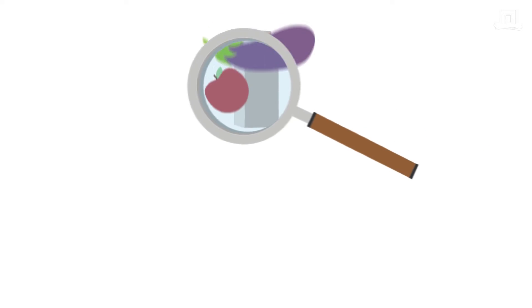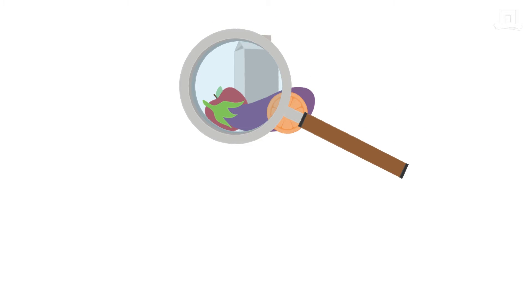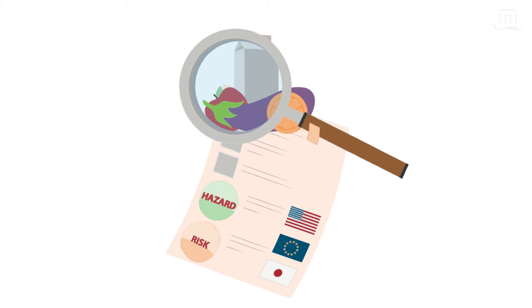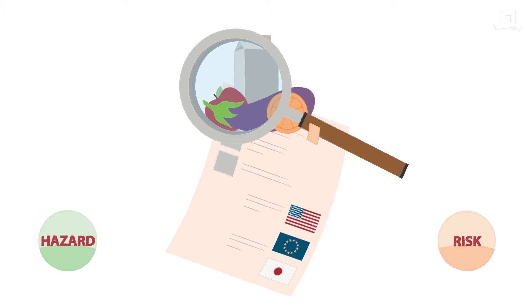When you want to assess risks in the food chain, you first need to learn some basic principles. These help to make sure that risk assessment is done in a similar way around the world. First of all, you should be aware of the difference between a hazard and a risk.